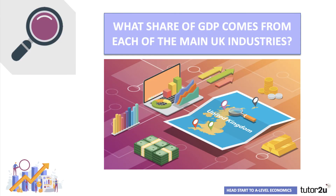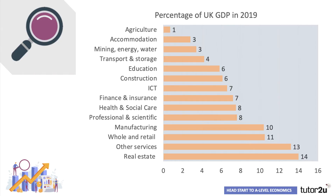So what share of GDP comes from each of the main UK industries? Let's take a quick look at the data for the UK, showing the percentage of GDP by value added in 2019. Notice how small, in relative terms, is the size of the farming or agricultural sector — it accounted for only 0.7% of GDP in 2019. Mining, energy and water together add another 3.4% to GDP. So those extractive primary industries account for less than 5% of the national output of the UK.